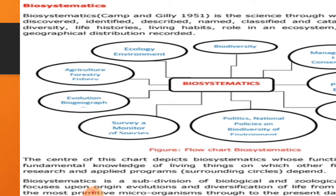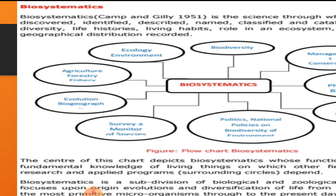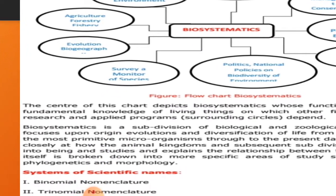Diversity میں یہ دیکھا جاتا ہے کہ یہ کہاں کہاں پر پھیلا ہوا ہے۔ اس کے بعد life history دیکھی جاتی ہے کہ یہ کب سے دنیا میں وجود میں آیا۔ Living habitat کیا ہے، aquatic ہے یا کچھ اور۔ Ecosystem میں اس کا کیا role ہے اور geographical distribution بھی بیان کی جاتی ہے۔